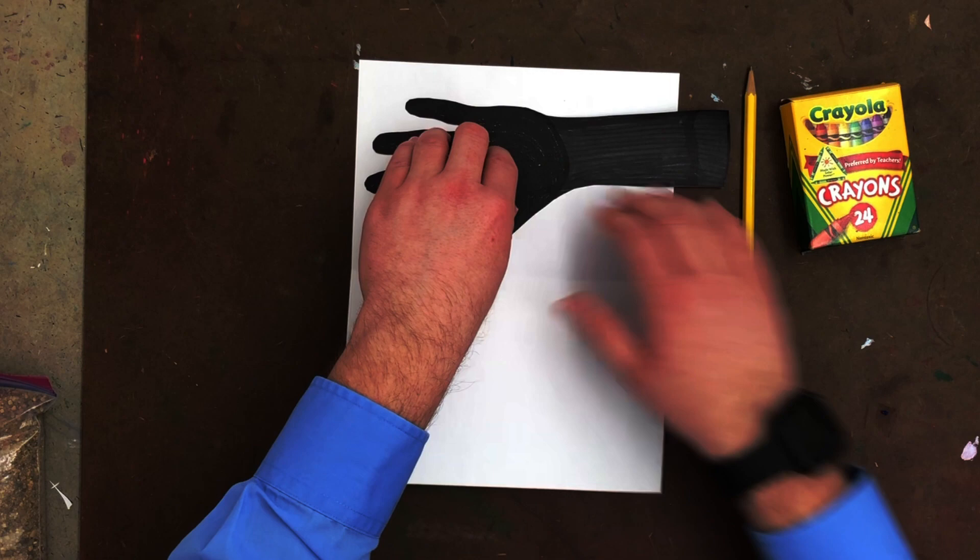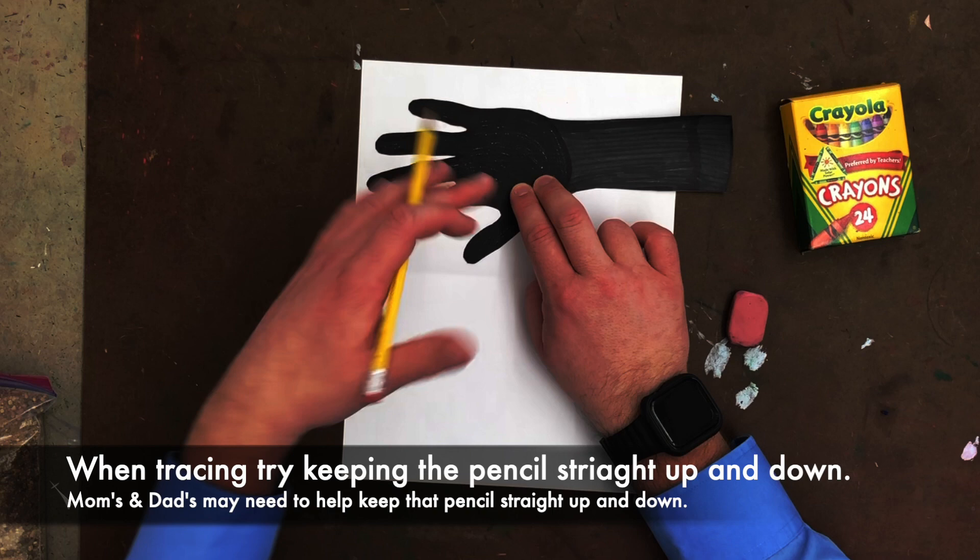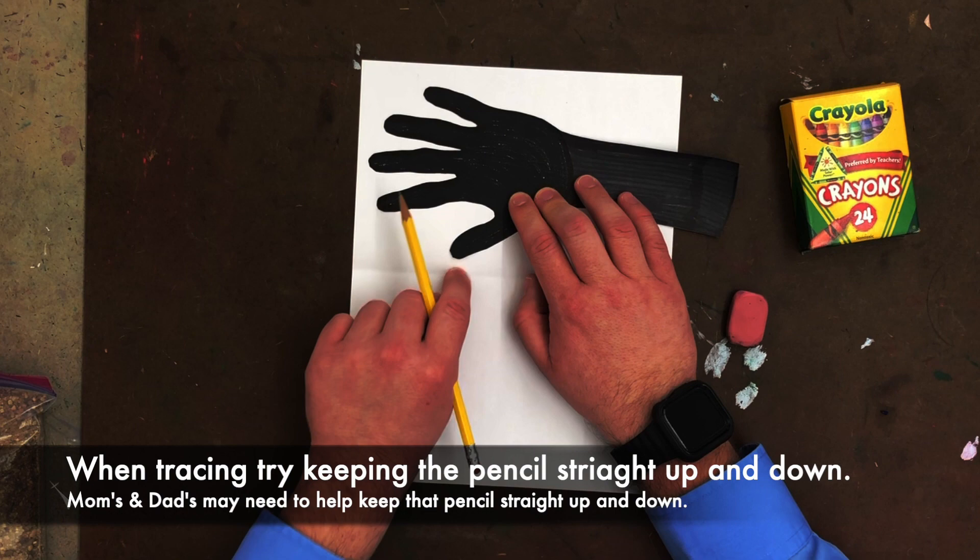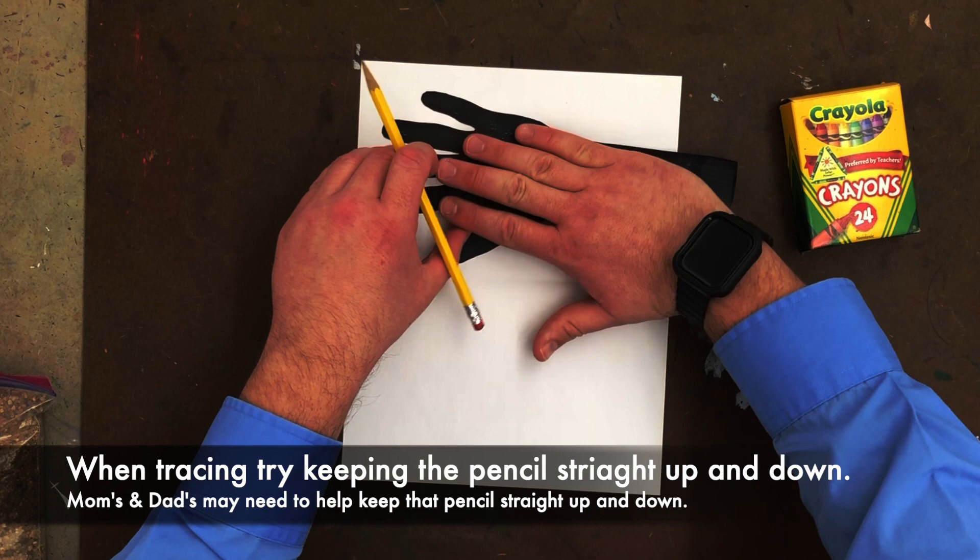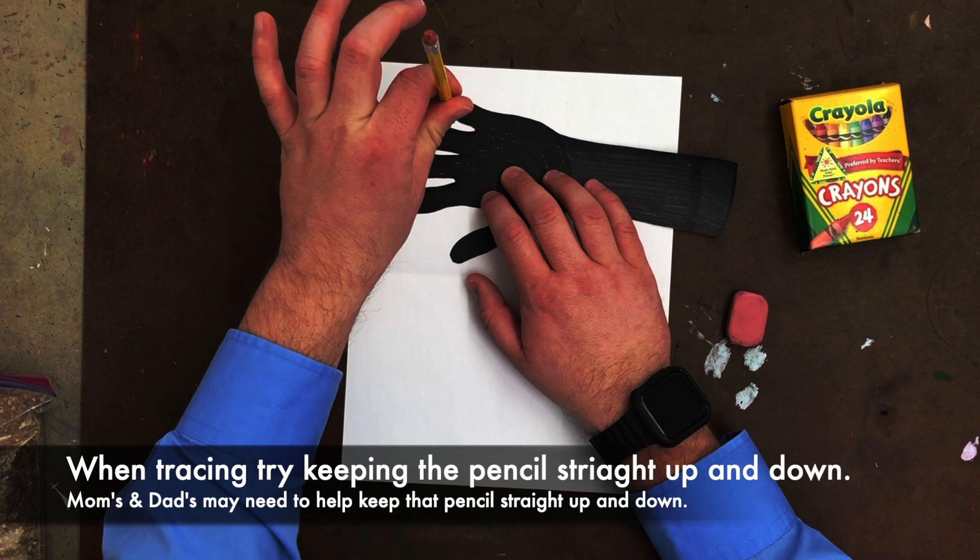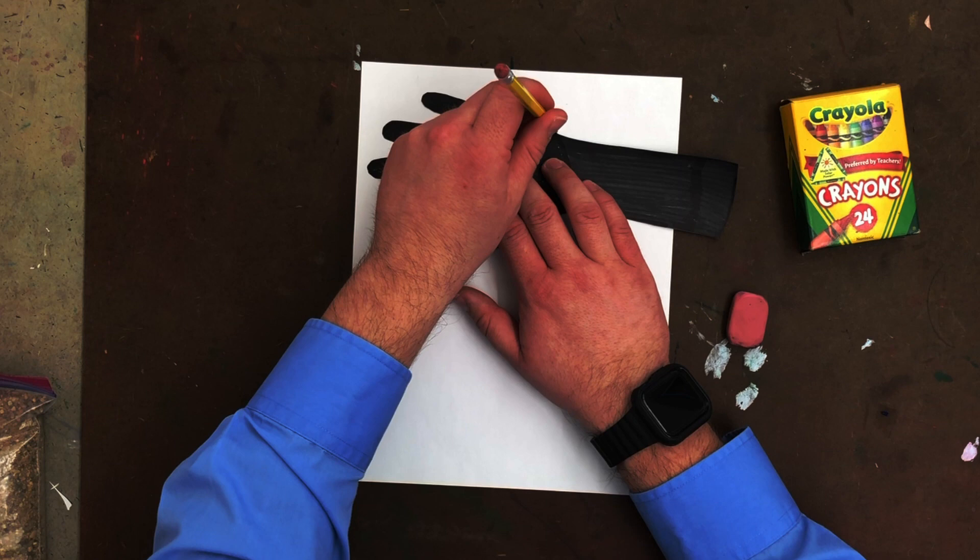Then what you're going to do is you're going to trace your hand. Now I'm going to tilt this a little bit more so it's just the thumb pointing at the fold here. And your parents might want to give you a hand with helping you trace this because it can be a little difficult. You want to keep the pencil straight up and down as you can. And I know it can be a little ticklish to trace your hand. So just be careful.